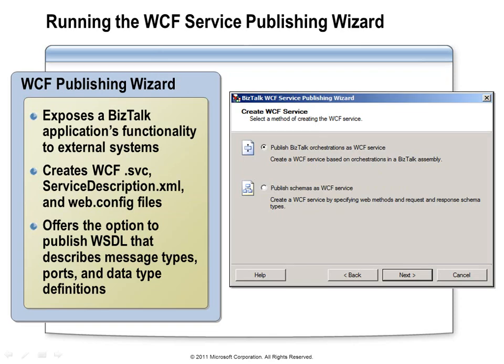To start the process, once we've built the orchestration, we run the WCF Service Publishing Wizard. For orchestrations, it looks at our orchestration and finds those public ports — the port provides information about operations, request messages, and response messages. It takes that information and creates the artifacts needed to host in IIS: a service endpoint, service description, and configuration files. The metadata exposure is optional but allows clients to consume it and build their own proxies to call our service. We'll also need to configure an application pool in IIS running as an identity that has appropriate access to read BizTalk configuration and submit messages into the message box.